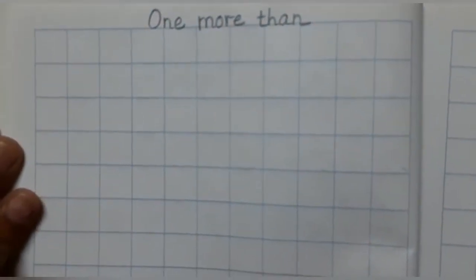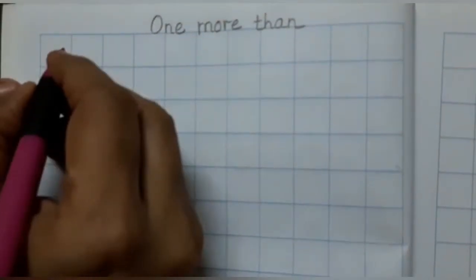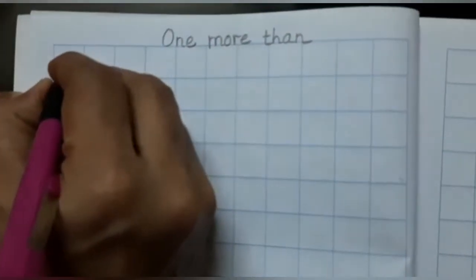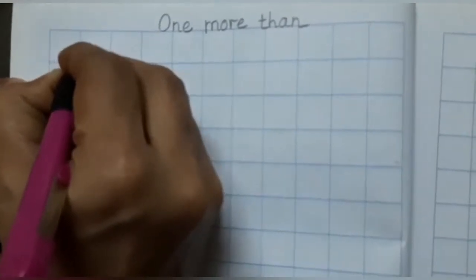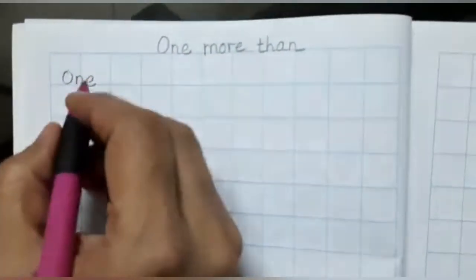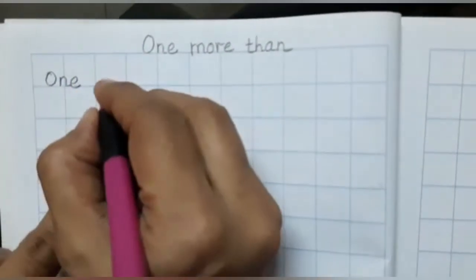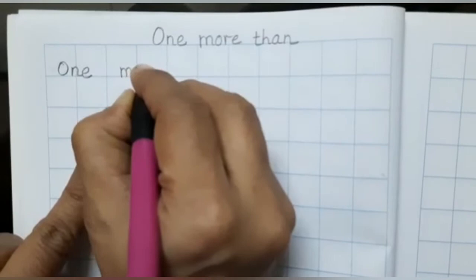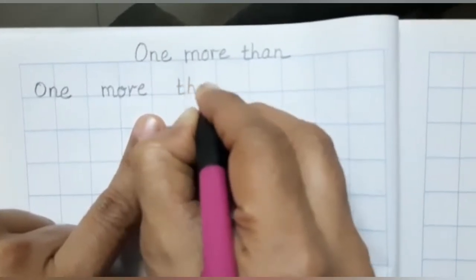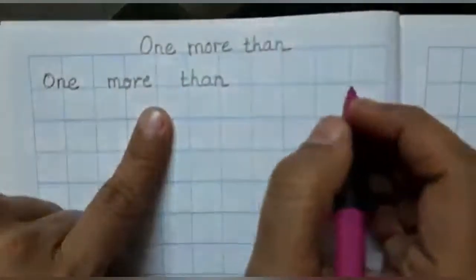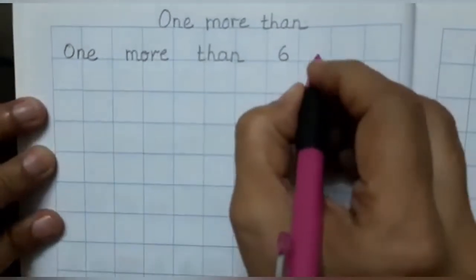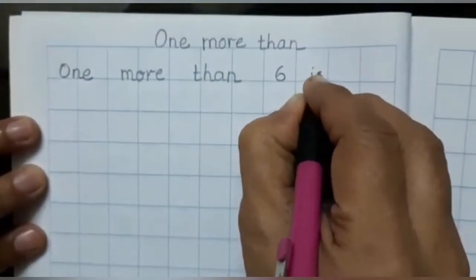Now let's write the sentence. Here, we are going to write 'one' — O capital — then leave a space between two words. Here I will keep one finger space, then write 'more', then again keep a finger space. Now let's take number six. Six is dash.